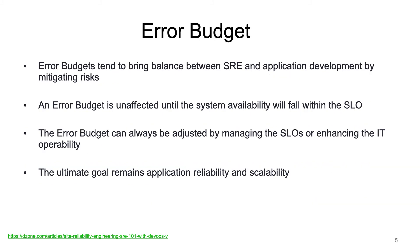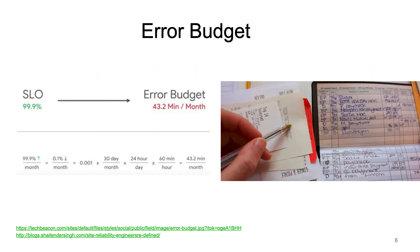Error budget essentially brings balance between SRE and application development by mitigating risk up front. It is unaffected until the system availability falls within the SLO. The ultimate goal of error budget is to maintain the application's reliability and scalability.